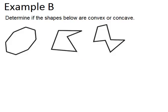Going on to example B, this question says, determine if the shapes below are convex or concave. Now, to be concave, it has to look like the polygon has caved in on itself, like two of the sides have fallen in towards the middle of the polygon.